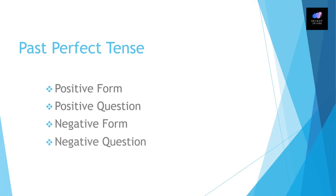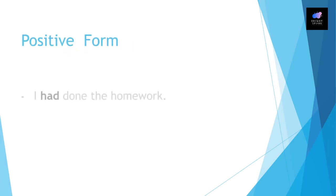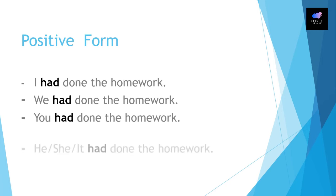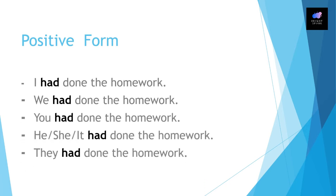I have used the same example in different situations to help you understand the sentence structure very clearly. Let's see the positive form. I had done the homework. We had done the homework. You had done the homework. He had done the homework. She had done the homework. It had done the homework. And they had done the homework.